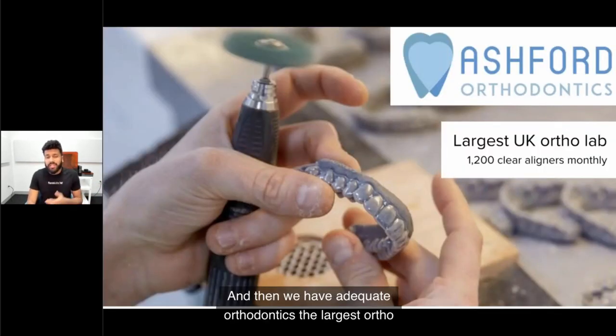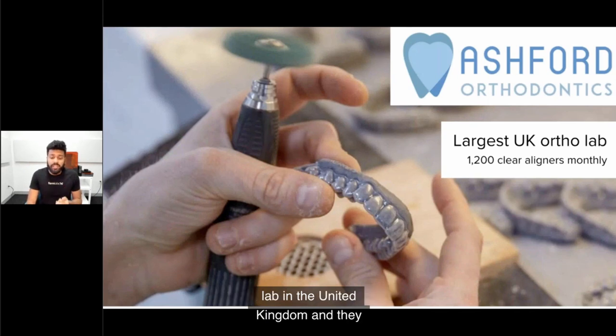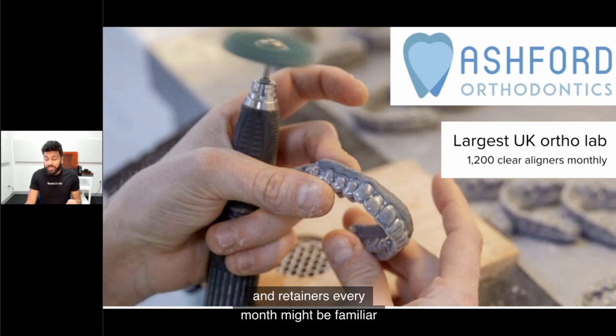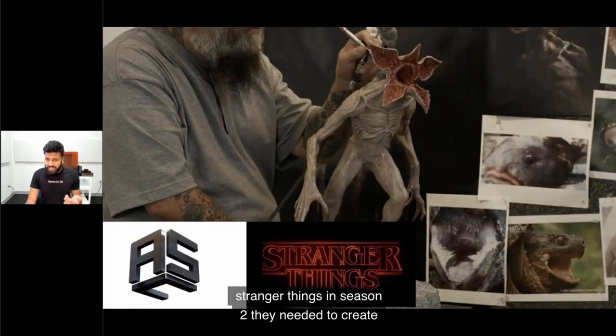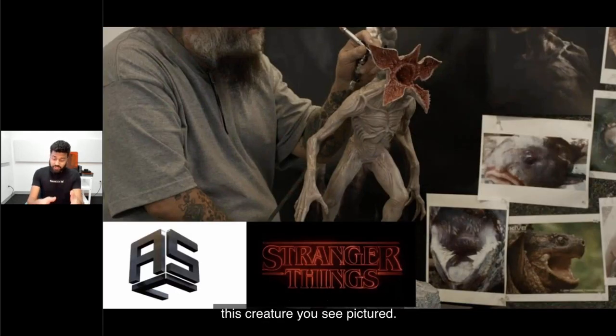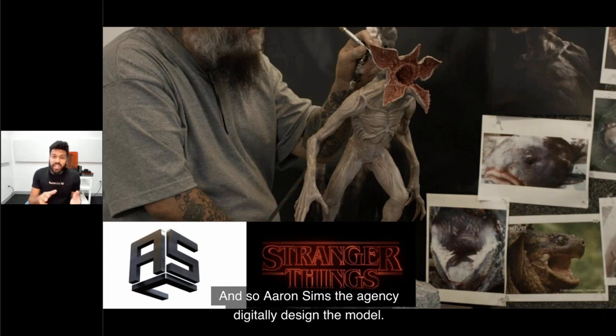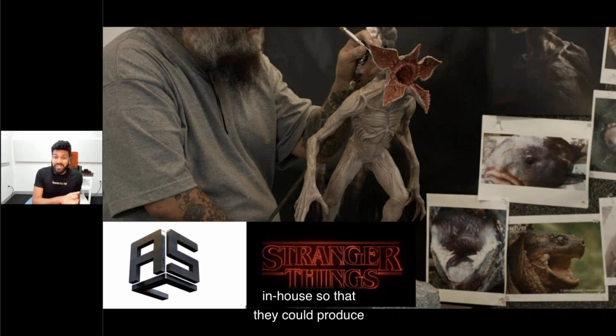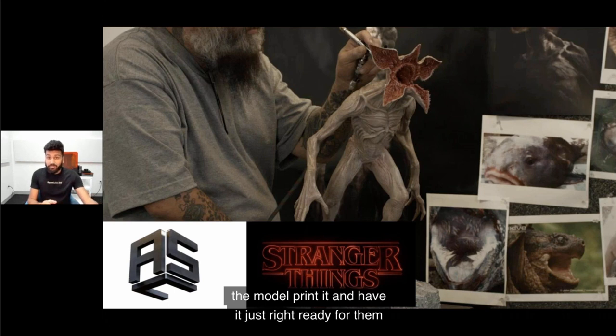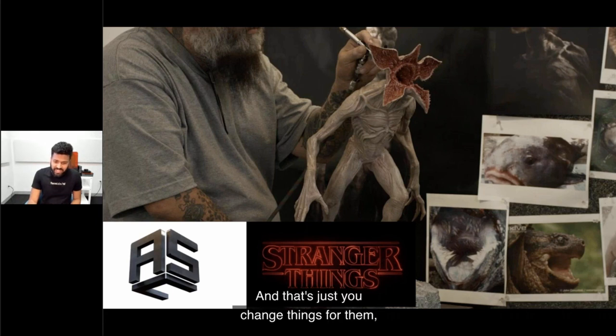Then we have Ashford Orthodontics, the largest ortholab in the United Kingdom, with a fleet of 12 Formlabs printers producing 1,200 clear liners and retainers every month. You might be familiar with Stranger Things. In Season 2, Aaron Sims used Formlabs printers to produce the model so they could show it to their directors within the day. That changed things because they didn't have to wait or outsource.